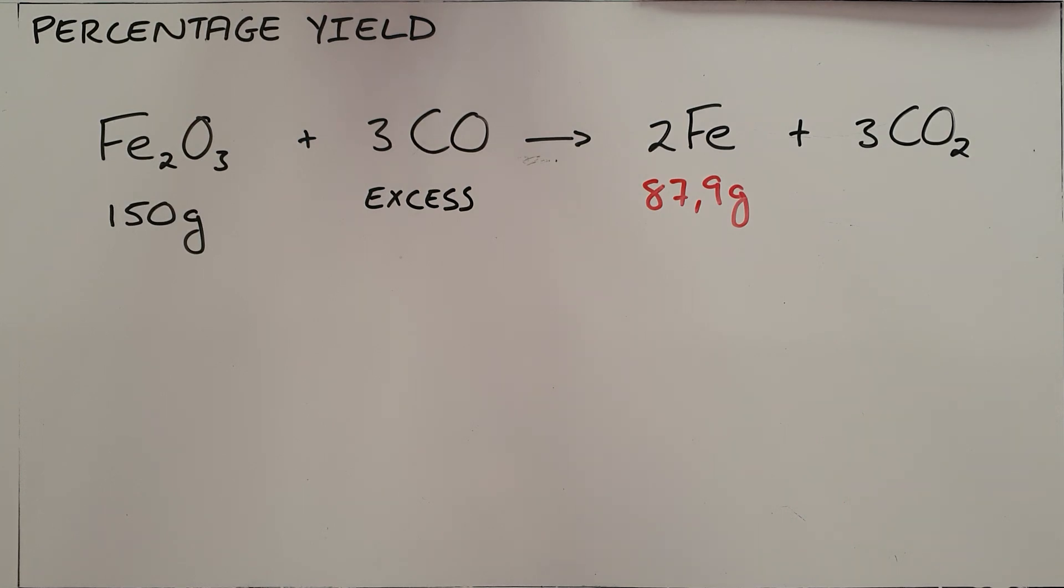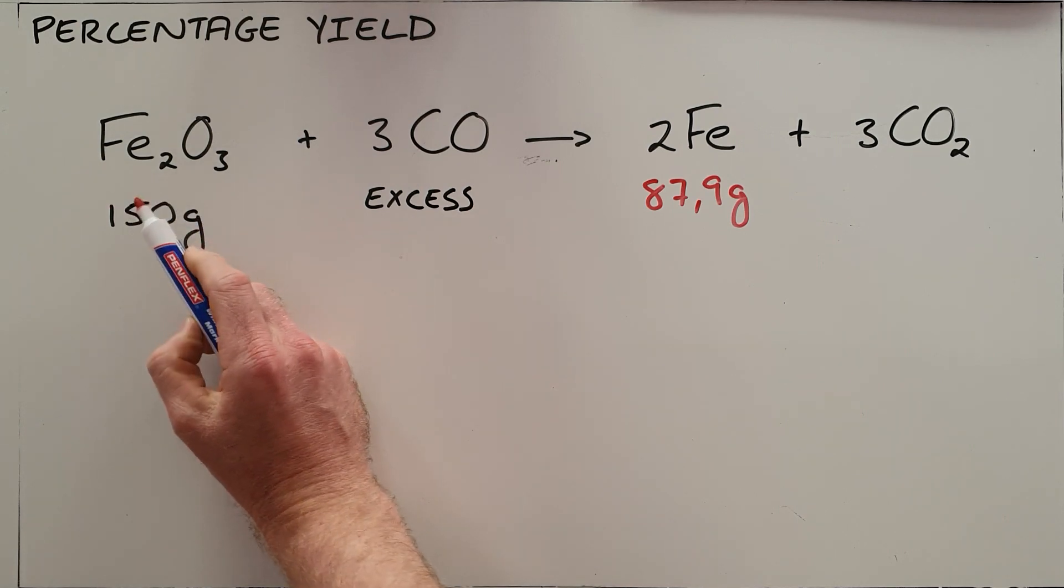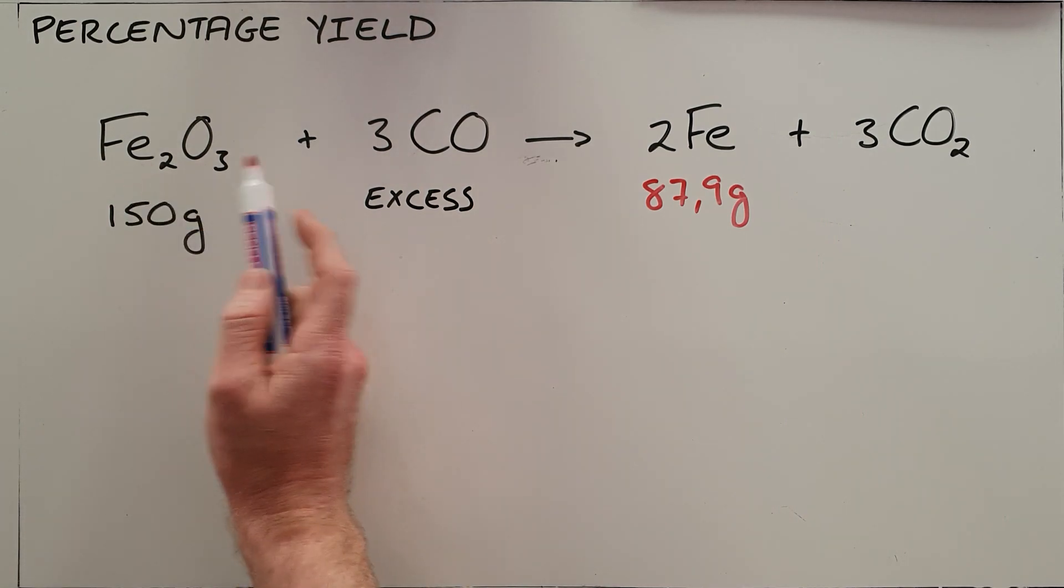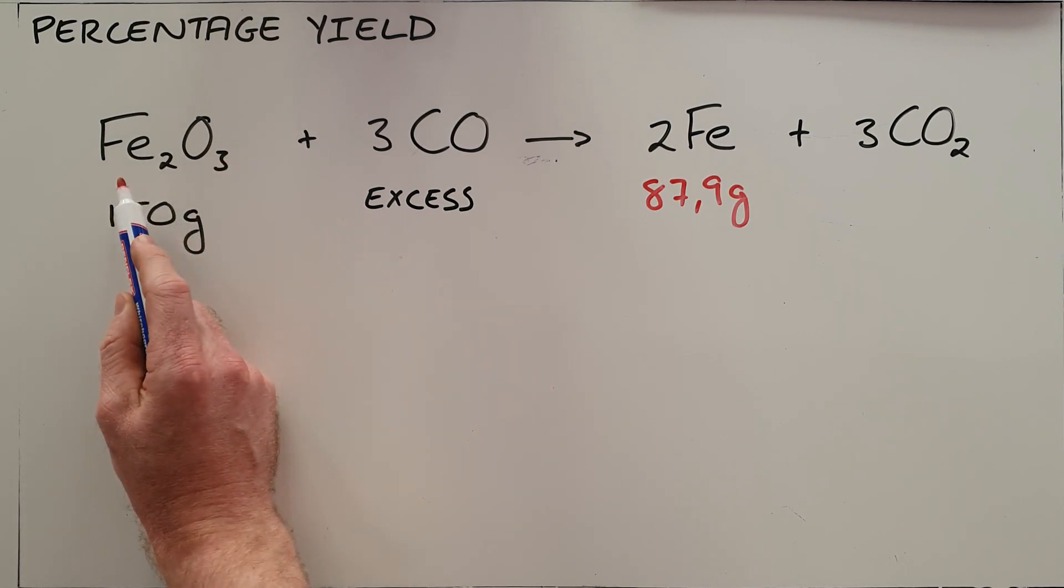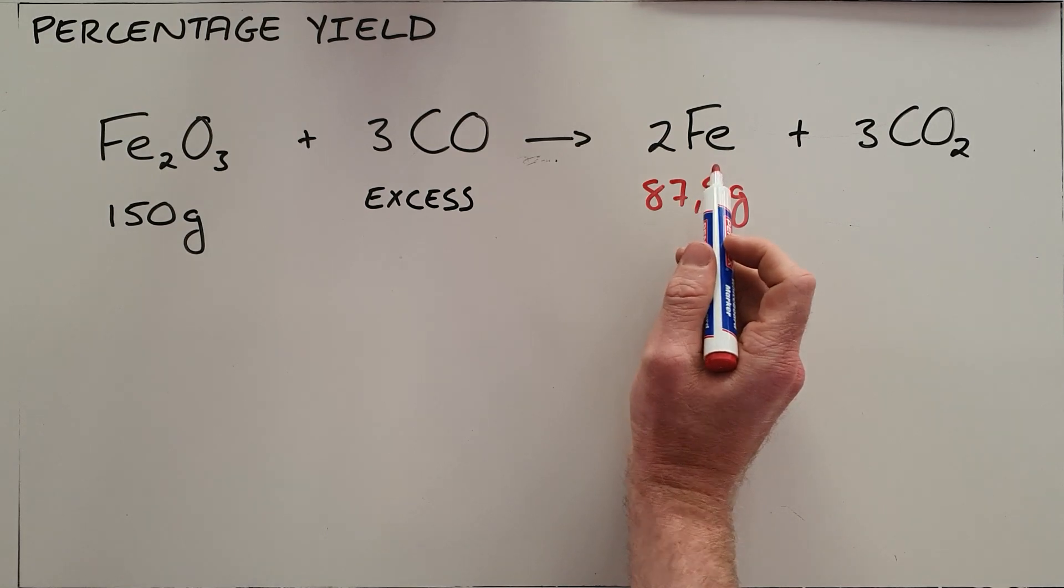Now a normal reason why you would yield less than you'd expect from a reaction like this is that the substance that you are starting with is impure, especially in the purification of iron. Obviously there could be many impurities which would result in you ending up with less iron than you expected.